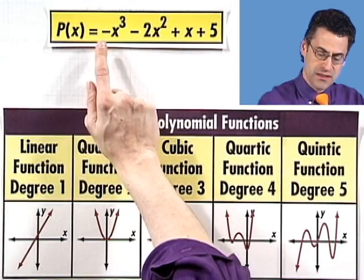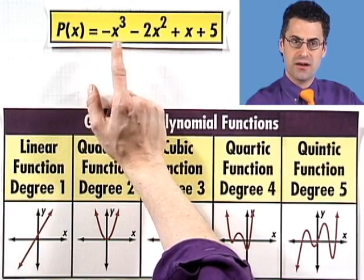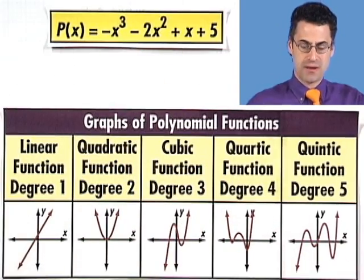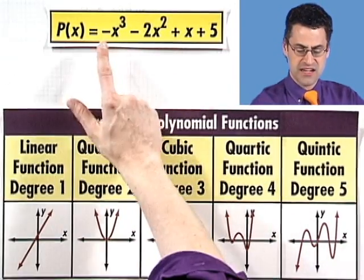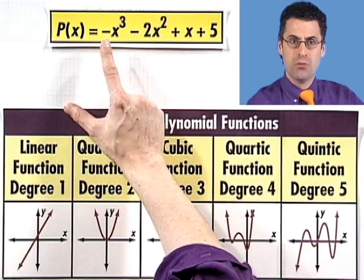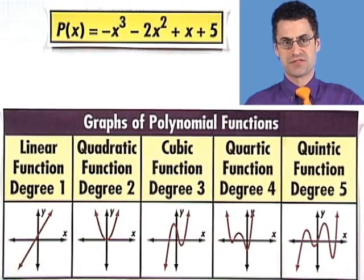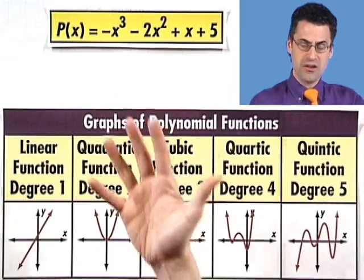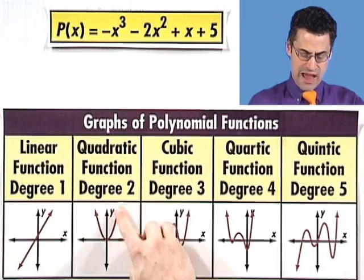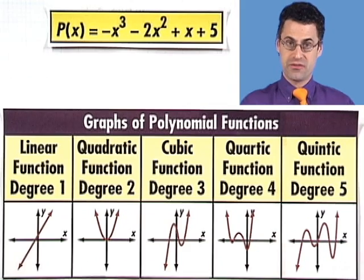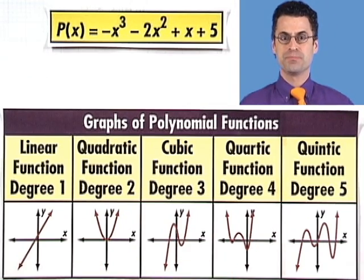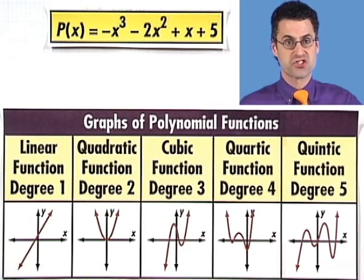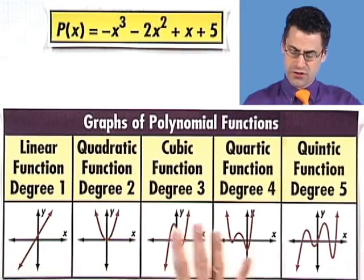Now, the leading coefficient—that's the coefficient in front of the x term with the highest power, in this case x³. Here we see it's -1. The sign actually tells us whether this thing is a happy-faced or sad-faced graph. We've seen happy-faced and sad-faced parabolas, determined by the sign of the coefficient on the x² term. That's true with all of these, although they don't look like happy faces anymore.